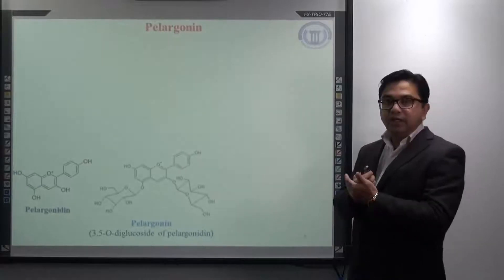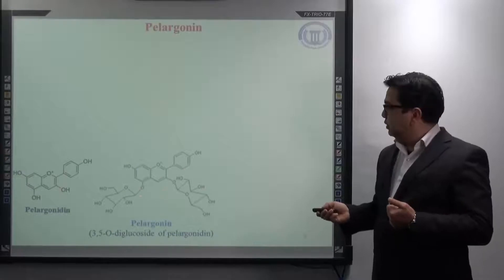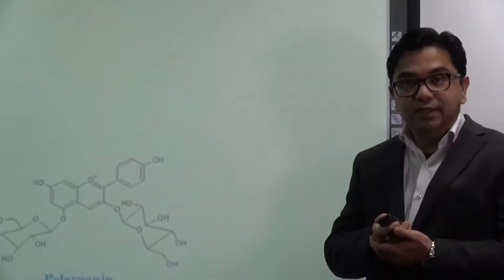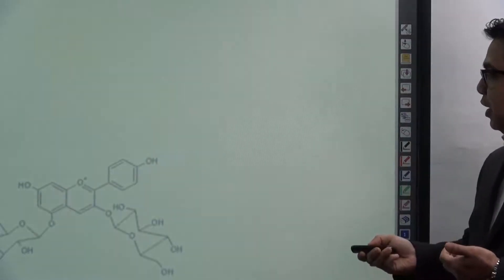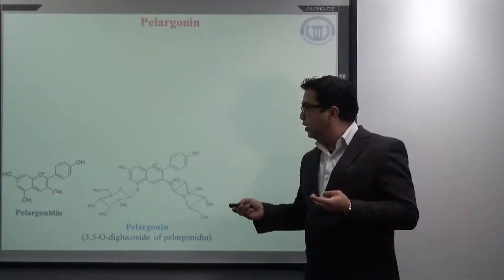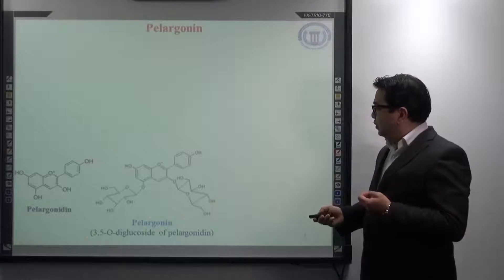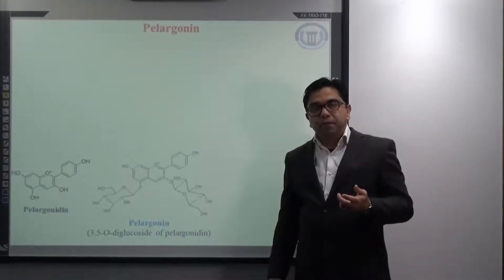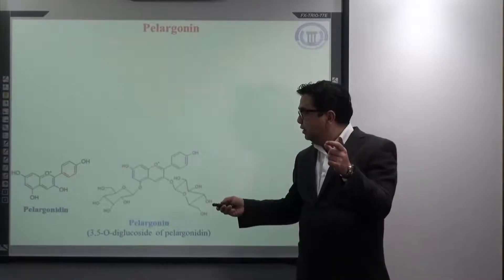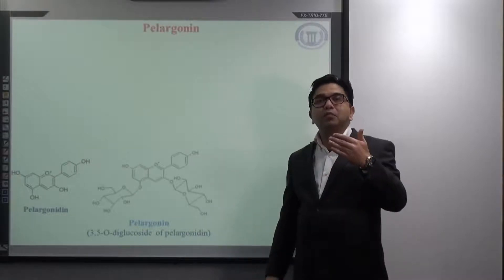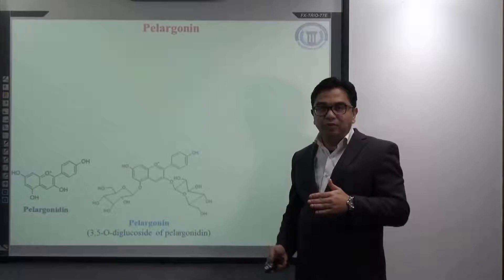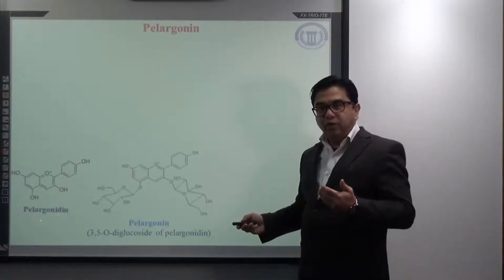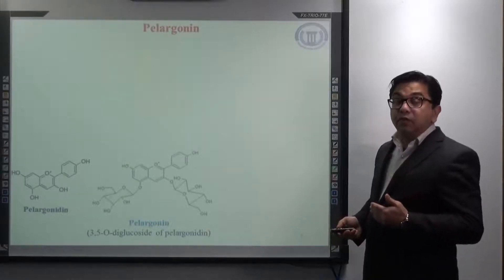First we will start with pelargonidin. If you look at the structure, can you tell me what type of glycoside it is, what type of sugar it contains? Pelargonidin is the name of aglycone when it is attached to two glucose molecules in the third position and the fifth position it forms 3,5-O-diglucoside of pelargonidin. Among different types of glycoside the 3-glucosides are more available and more stable, then the second variety comes 3,5-diglucoside.